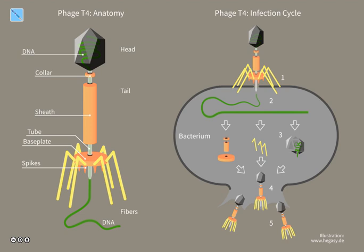Phages are widely distributed in locations populated by bacterial hosts, such as soil or the intestines of animals. One of the densest natural sources for phages and other viruses is seawater, where up to 9×10^8 virions per milliliter have been found in microbial mats at the surface, and up to 70% of marine bacteria may be infected by phages. They have been used for over 90 years as an alternative to antibiotics in the former Soviet Union, Central Europe, and France.